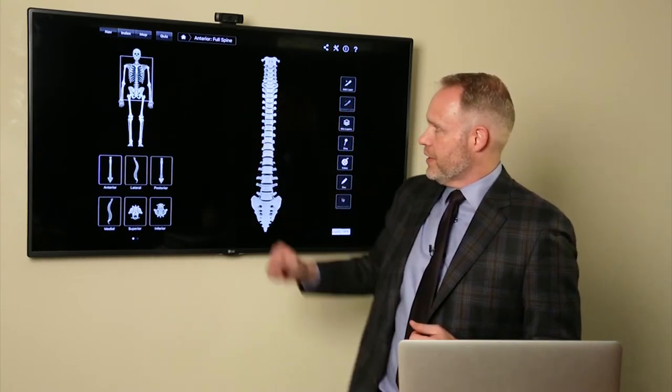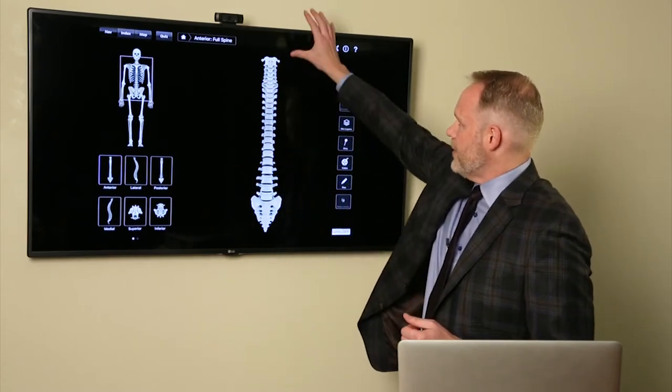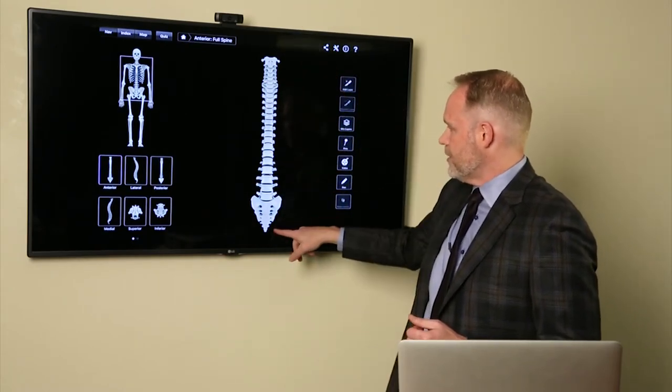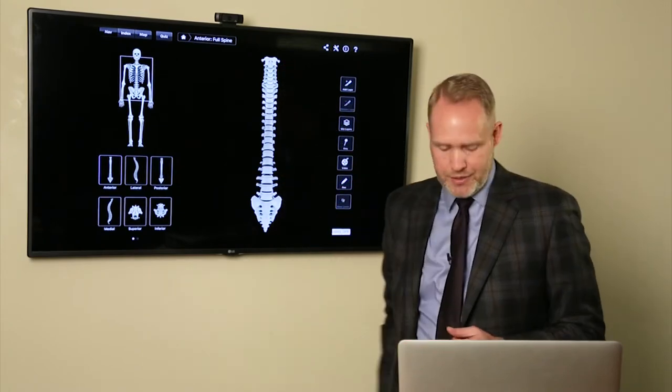You can see there's the whole skeleton over here on the left, and you can see the image that we're focusing on there in the square. So the head would be above here, there's a tailbone down there, and this is the neck, the mid-back, the low back, and then the coccyx area.